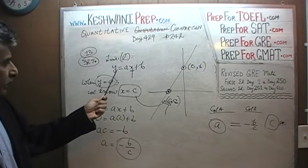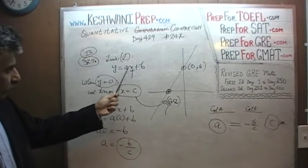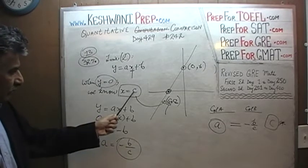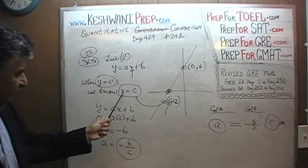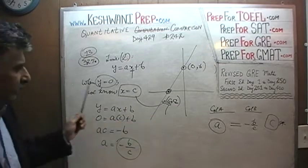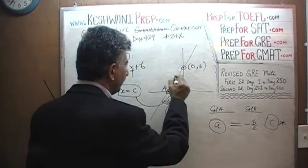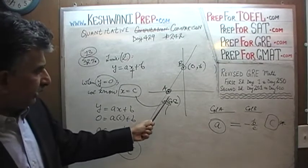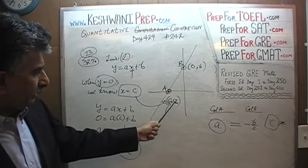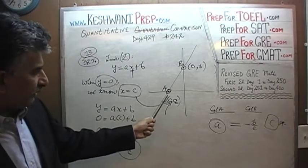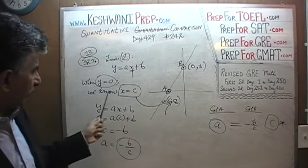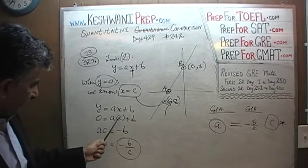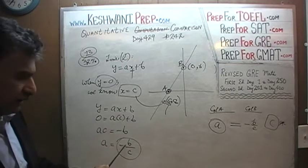Here is the equation of the line: y equals ax plus b. We know that when y equals 0, x equals c — that's point A at (c, 0). We also know point B is at (0, b). We can calculate the slope going from point A to point B: change in y over change in x equals (0 minus b) over (c minus 0), which equals negative b over c — exactly what we found.